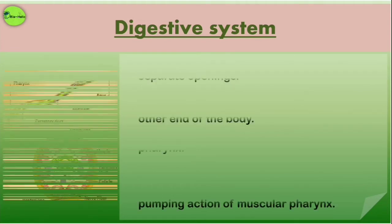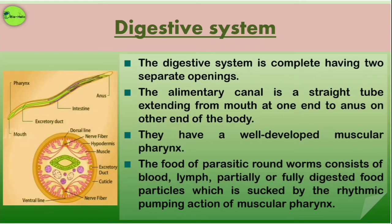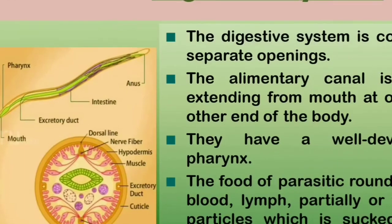The digestive system of roundworms is complete, having two separate openings — one is the mouth and the other is the anus. The alimentary canal is a straight tube extending from the mouth at one end to the anus at the other end of their body. They also have a well-developed muscular pharynx, as you can see in this picture.